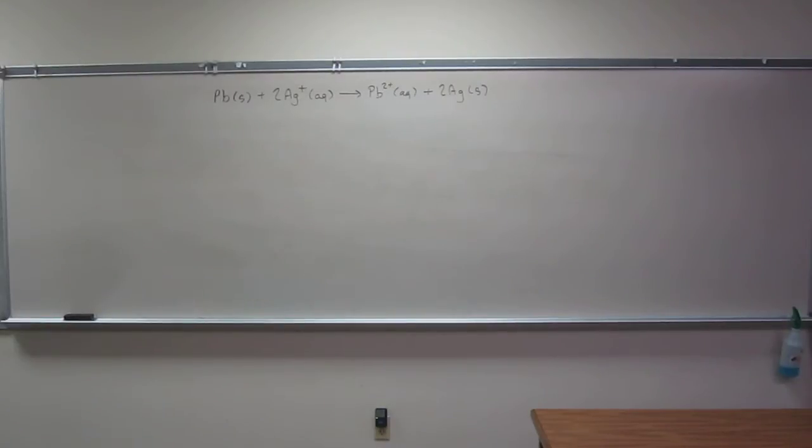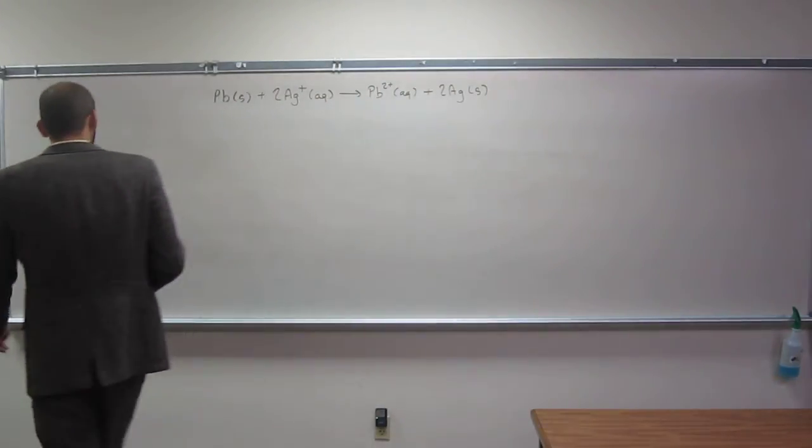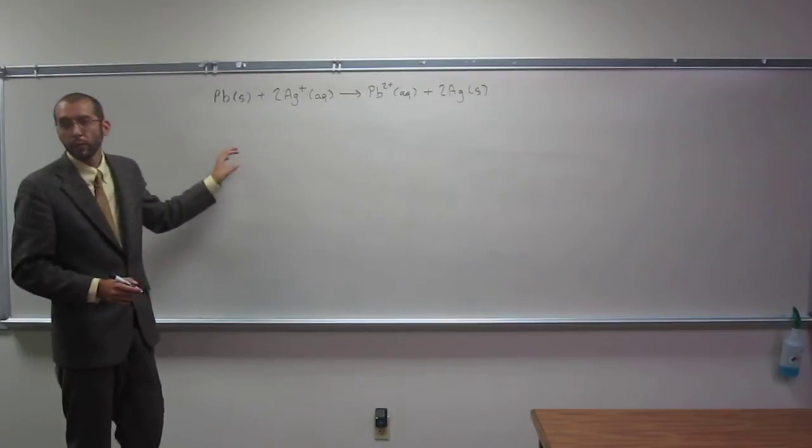Okay, so lead can displace silver from solution by the following reaction. Calculate K and delta G standard for this reaction at 25 degrees Celsius.